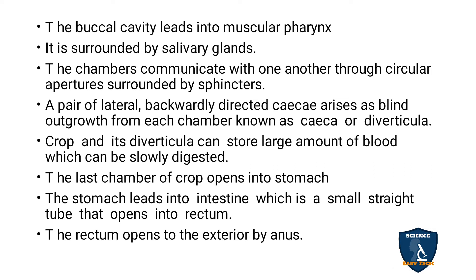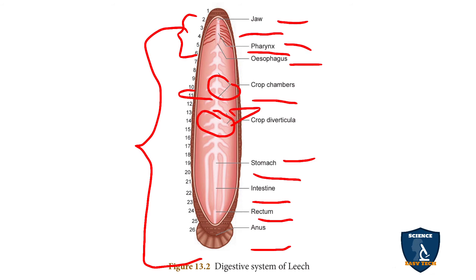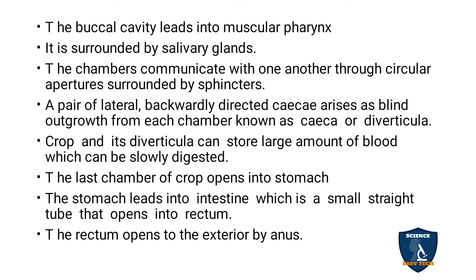The crop and its diverticula — also called caeca — store a large amount of blood in both the crop chamber and diverticula, and slow digestion is seen in the leech. The last chamber of the crop is followed by the stomach, which leads to the intestine. From the intestine, a small straight tube called the rectum is present, and the rectum opens to the exterior through the anus.